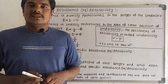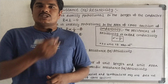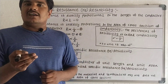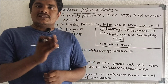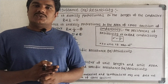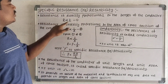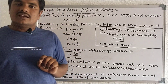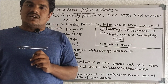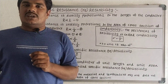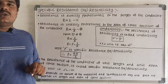Good morning students. Today in this class we discuss about specific resistance or resistivity. We know that resistance is directly proportional to the length of the conductor, that is R is proportional to L. And resistance is inversely proportional to the area of cross section of the conductor, that is R is inversely proportional to A.